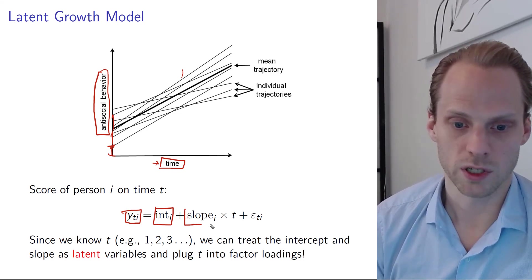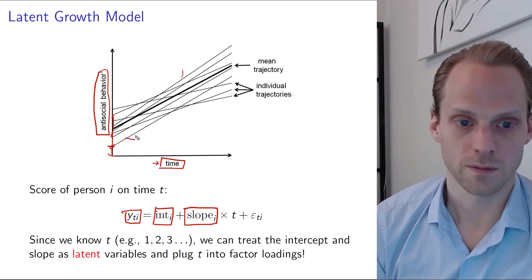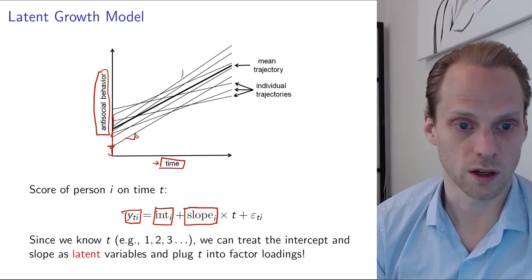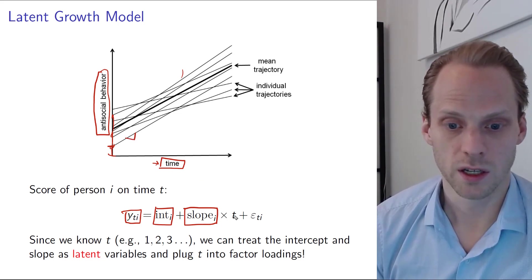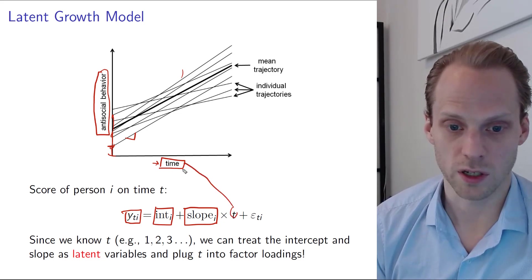Plus a slope, and that's the rate of change here, times t, which is time itself, plus some random error around it.